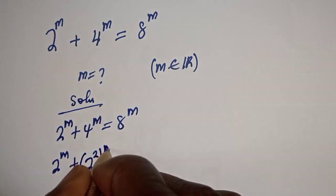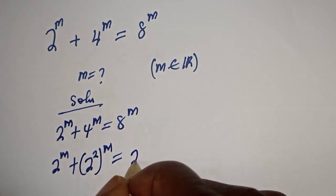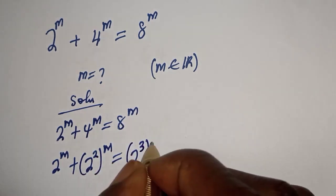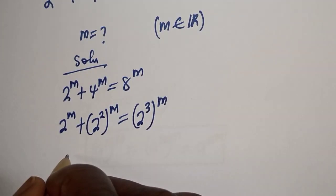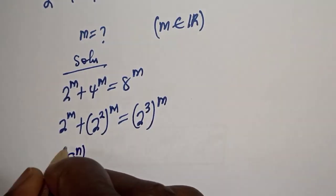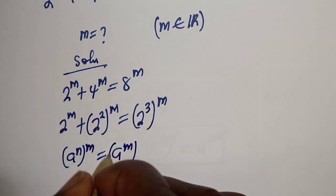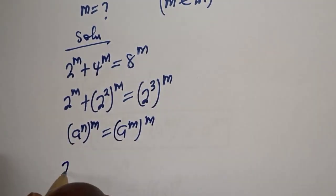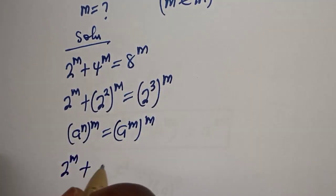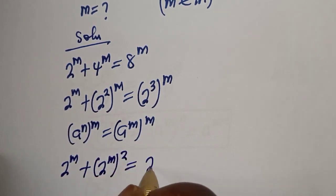2 squared to the power of m is equal to 8 raised to power m, which can be written as 2 raised to power 3 to the power of m. Take note that if you have a raised to power n to the power of m, this is equal to a raised to power m to the power of n.